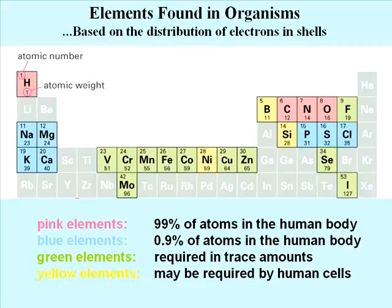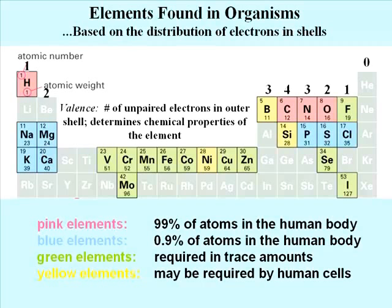The number of unpaired electrons in an atom's outer shell, or its valence, determines the chemical reactivity of the element. The valences of the elements used by cells range from 1 to 4. At the far right you can see the noble gases, which have no unpaired electrons, and so have a valence of 0.